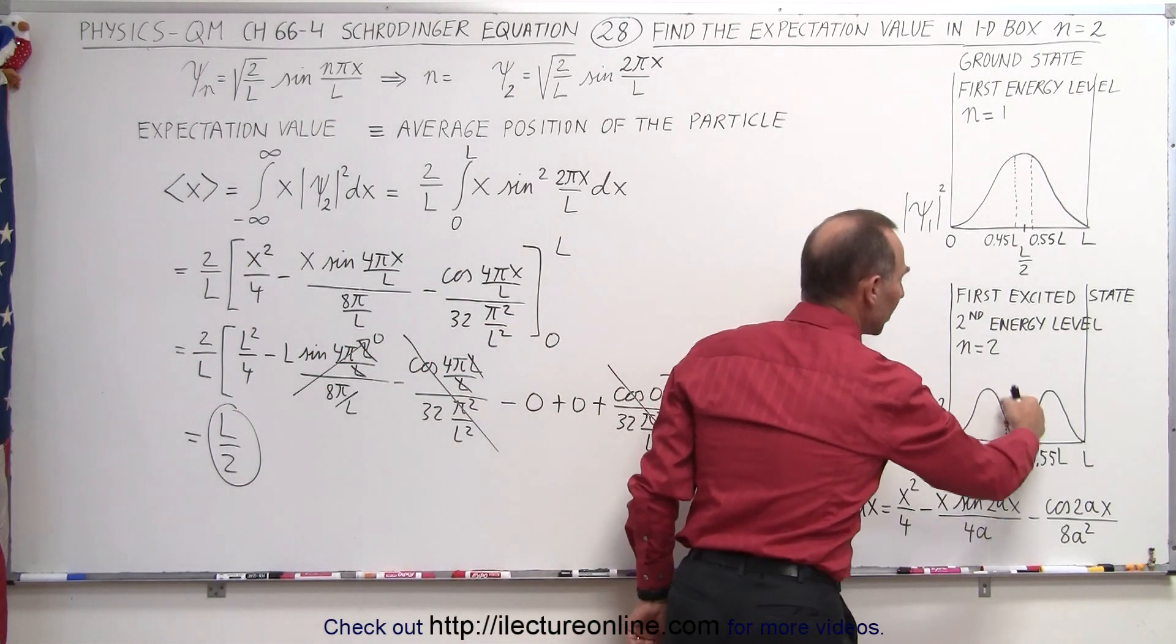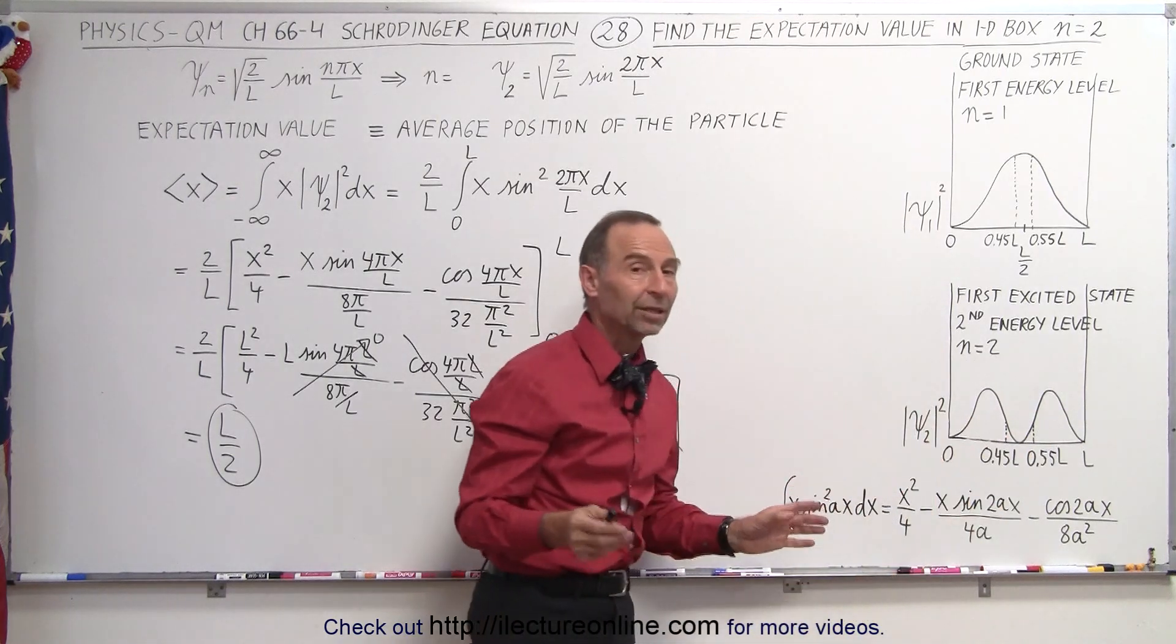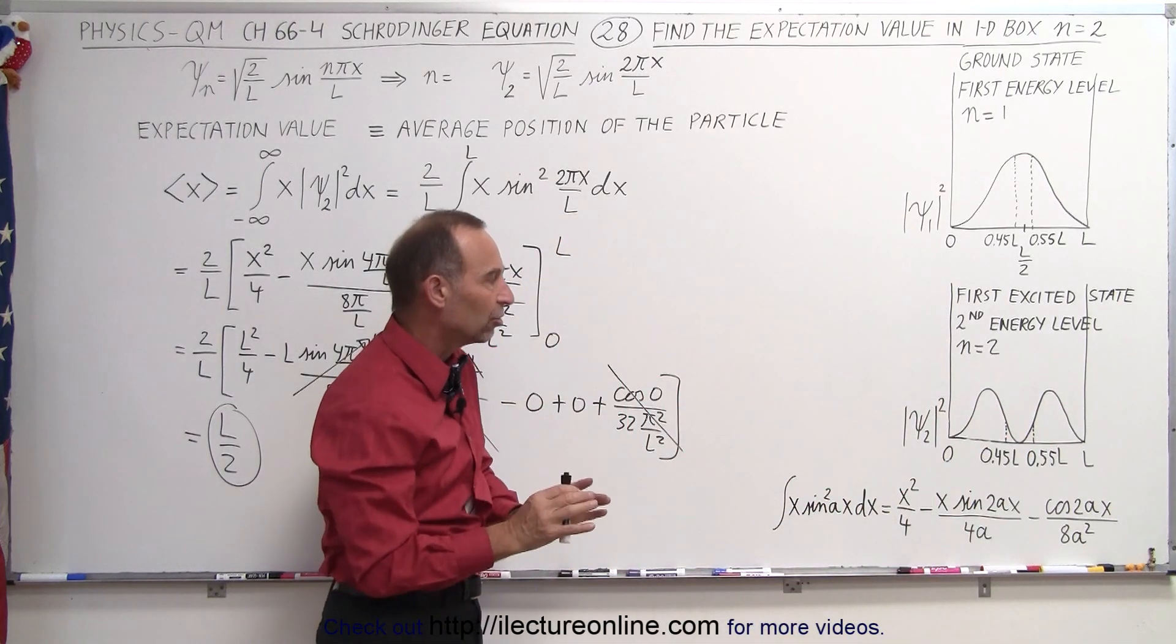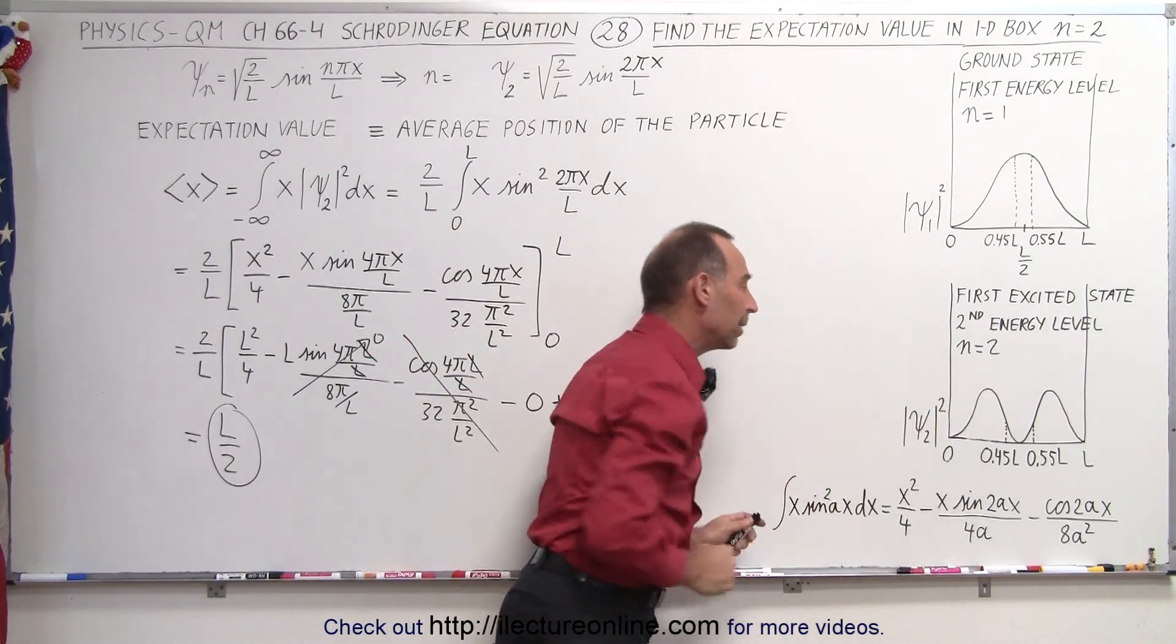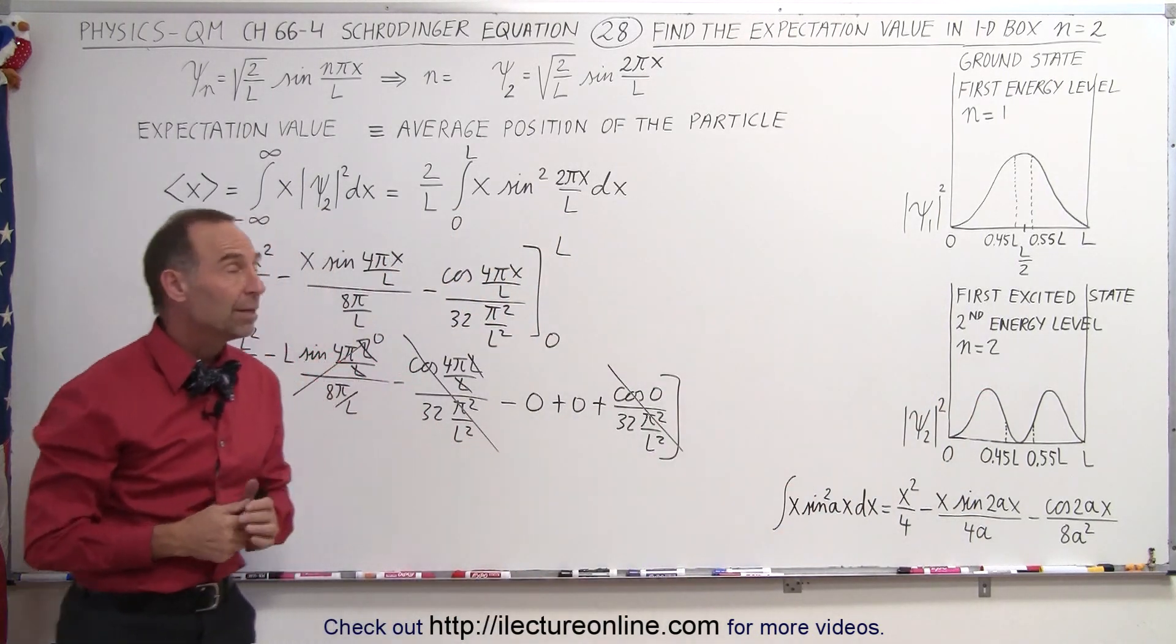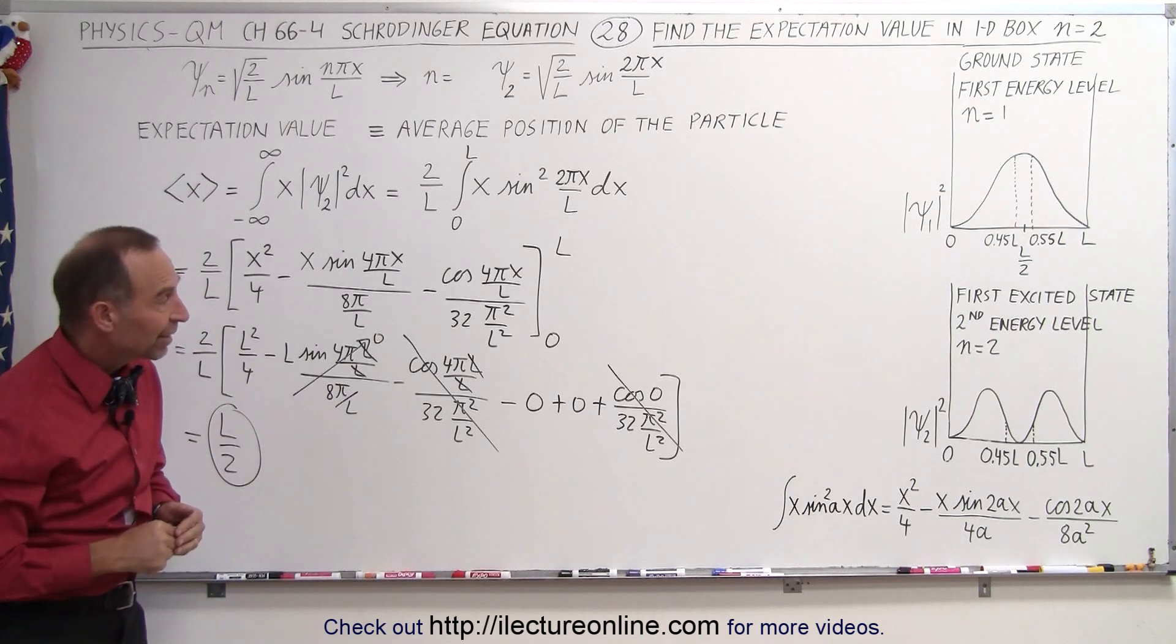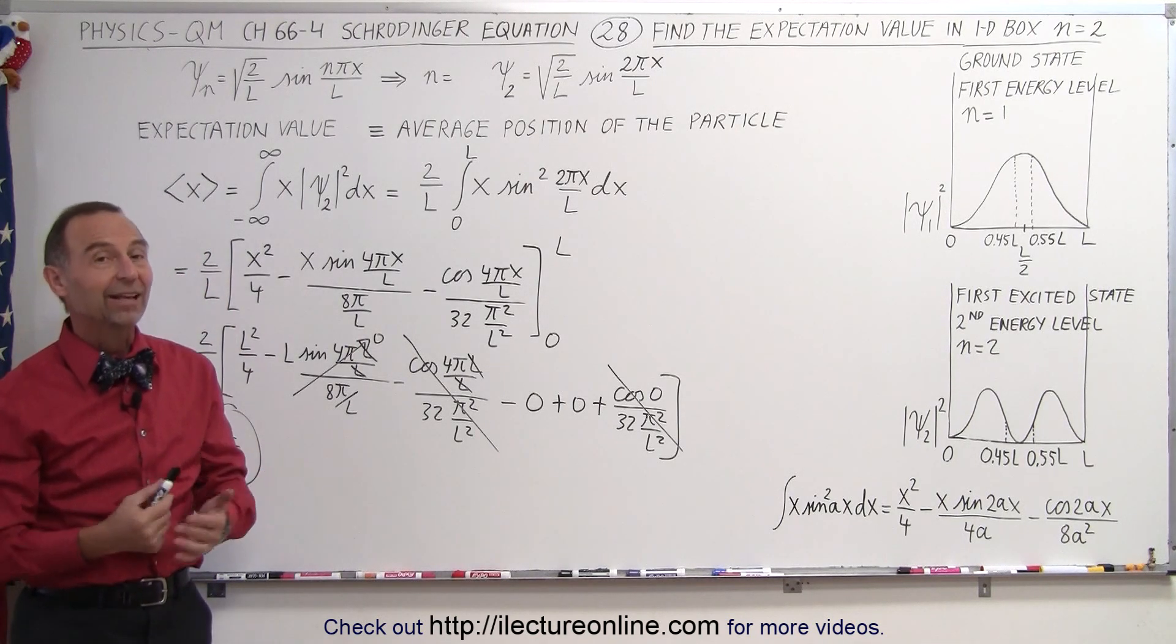Because the probability density function of a particle in a one-dimensional box at any energy level will always look symmetric to the left side and the right side of the middle of the box. And that's what we mean by the expectation value of a particle. And that's how it's done.